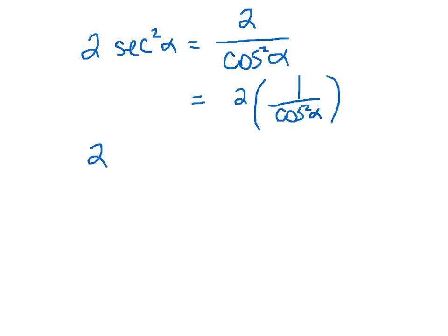So we can say 2 secant squared alpha equals 2 times secant squared alpha. So that means this is going to check off and work. So we proved both sides correct.